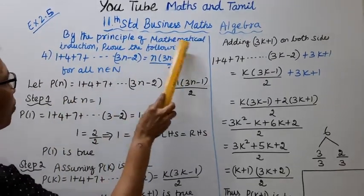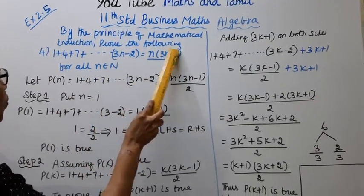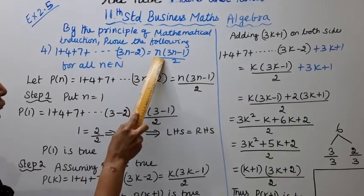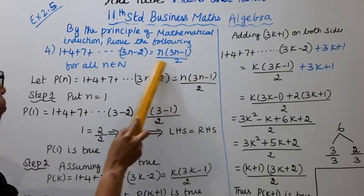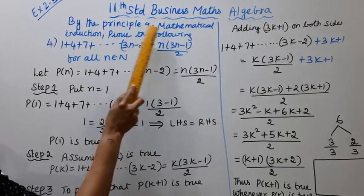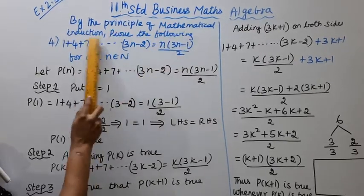By the principle of mathematical induction, prove the following: 1 plus 4 plus 7, etc., 3n minus 2 equal to n into 3n minus 1 by 2 for all n belongs to n. In the principle of mathematical induction, step 1, step 2, step 3.